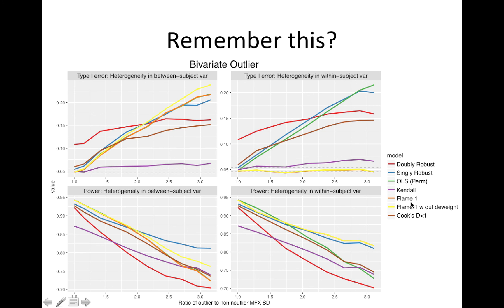I looked at all these models — two types of robust regression, OLS, the permutation test, Kendall's tau, FLAME1 with and without the outlier weighting option, and the idea of removing subjects with a small Cook's d to automate outlier removal. FLAME1 is going to be king when the outlier is driven by within-subject variance. But the key story here is that OLS and the permutation test fail together, equally badly.